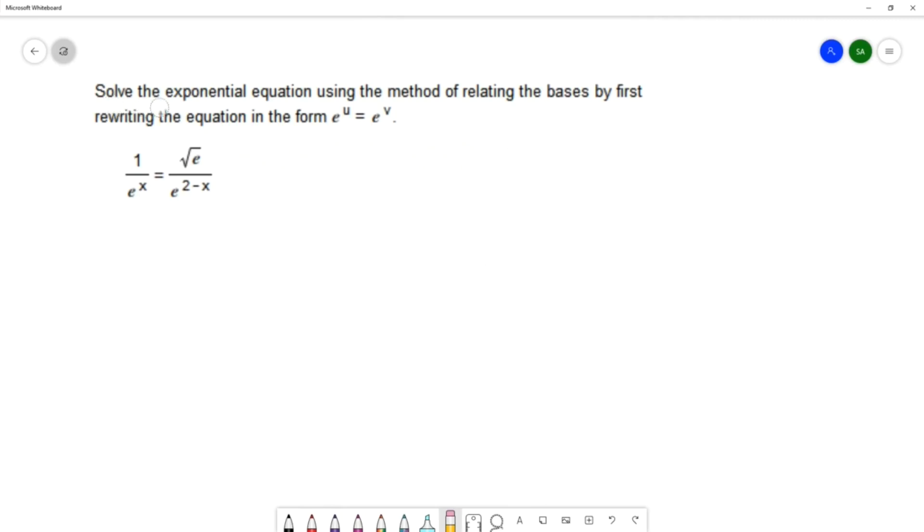On this question we want to solve the exponential equation using the method of relating the bases by first rewriting the equation in the form e^u = e^v. The equation that we want to solve is 1 over e^x equals the square root of e over e^(2-x).